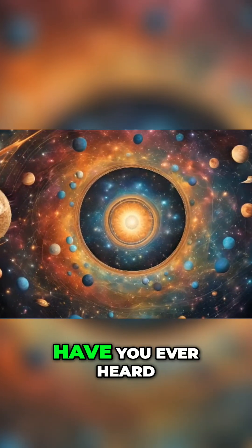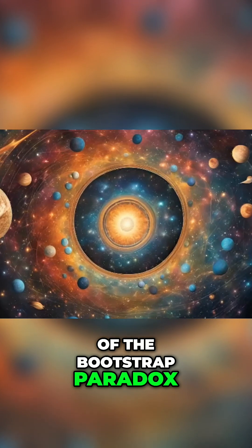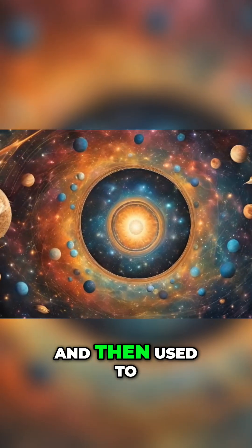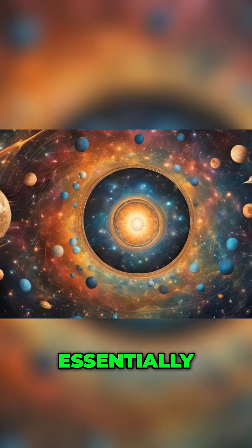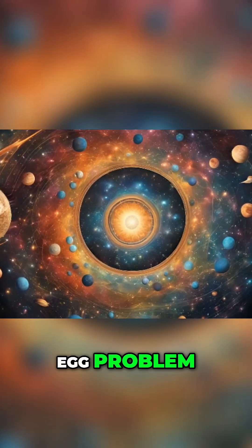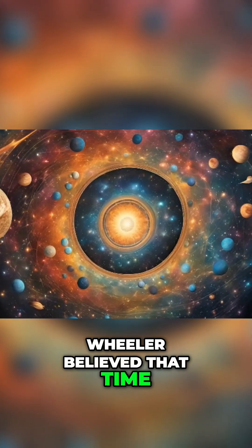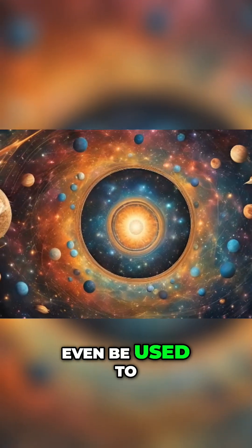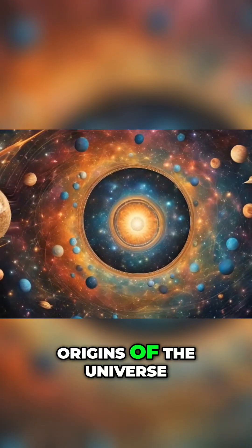For example, have you ever heard of the bootstrap paradox? It's a situation where an object is sent back in time and then used to create itself. Essentially, it's a chicken and egg problem. Wheeler believed that time loops could be the solution to this paradox, and that they could even be used to explain things like the origins of the universe.